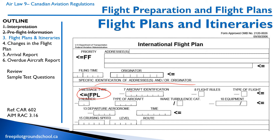We'll start with the aircraft identification. Then there's a code field, flight rules — visual — and type of flight we can ignore. The number field is for formation flights; if three aircraft are going to the same spot, you put three. Type of aircraft: we'll put a C-150. Wake turbulence: L. For equipment, the ones you really need to worry about are VHF radios — V and G. You probably have a Mode C transponder. Departure aerodrome: Thunder Bay, CYQT. Departure time: let's call it 1200 Zulu.